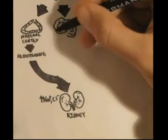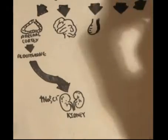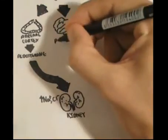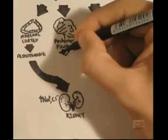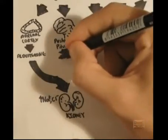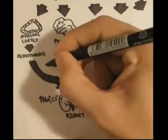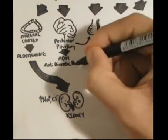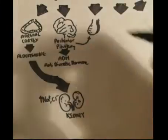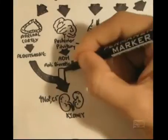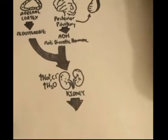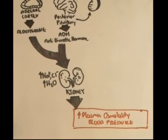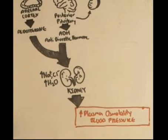Angiotensin 2 also targets the brain, stimulating the pituitary gland to secrete antidiuretic hormone, or ADH. ADH causes water retention in the kidneys. More water retained along with more sodium causes an increase in blood pressure.